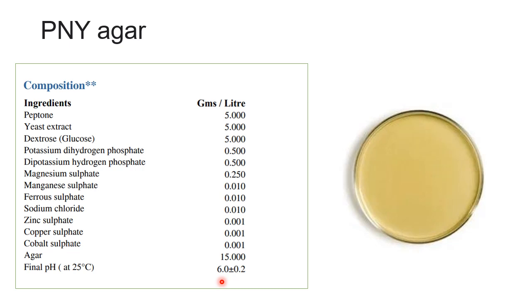PNY agar is mainly used for lactobacilli. Lactobacilli grow in a variety of habitats wherever high levels of soluble carbohydrates, protein products, vitamins, or low oxygen tension are present. In the human body, such conditions are found in the oral cavity, intestinal tract, and vagina. Food products and dairy products also provide these conditions — soluble carbohydrates, proteins, vitamins, and low oxygen tension. That is why PNY medium is formulated for isolation and cultivation of Lactobacillus species.